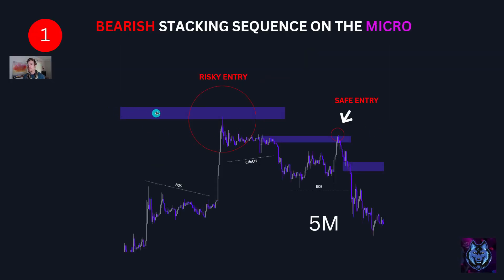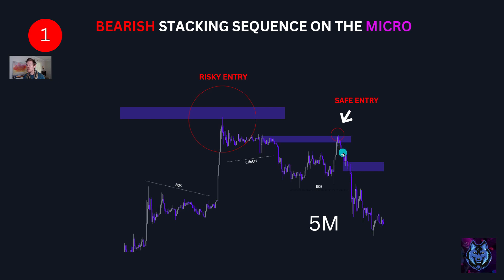This is our 30-minute supply zone over here. Price comes up, it breaks the structure with massive momentum to the upside and taps into this 30-minute order block. We could have entered right then, but that would have been an aggressive, more risky entry. If we wanted a safer entry, we would have waited for price to replicate the same move. You can see it consolidates, and then we have this change of character, which is what we're looking for. It leaves behind this imbalance and this supply zone — this nice order block — and this becomes the zone we look for for an entry. It's a much safer entry. It taps into the zone and drops again.